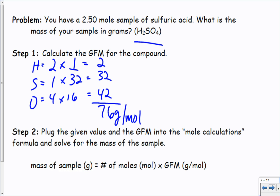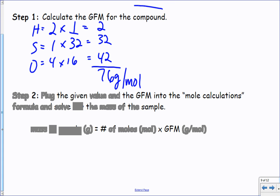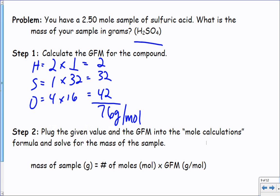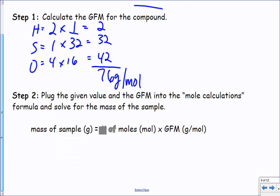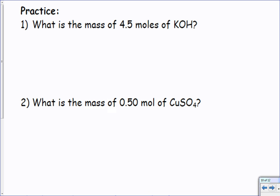Plug the given value and the GFM into the moles calculation formula. Mass of sample is going to equal the number of moles times the GFM. It says I have 2.5 moles, so it's going to be 2.5 moles times 76 grams per mole. That's going to let my moles cancel and put me in grams. 76 times 2.5 equals 190 grams.